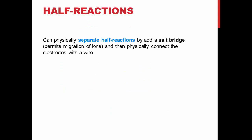In lab, we are able to physically separate the two half-reactions of the cell. The two reactions can be connected with a salt bridge, which allows the migration of ions from one solution to another, and a wire, which will be in the form of a voltmeter, to measure the electron flow between the anode and the cathode.